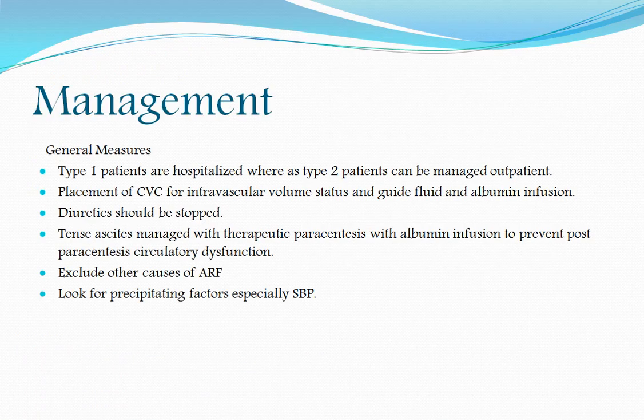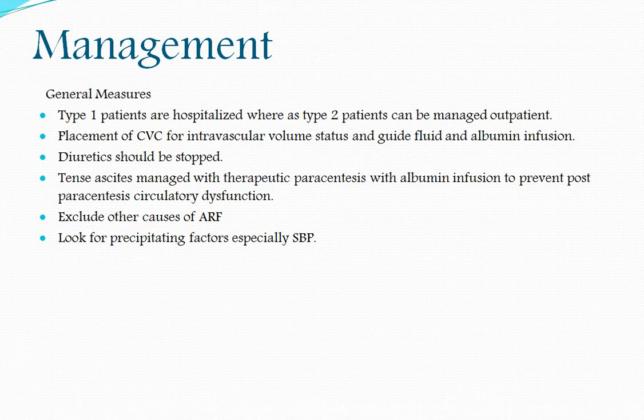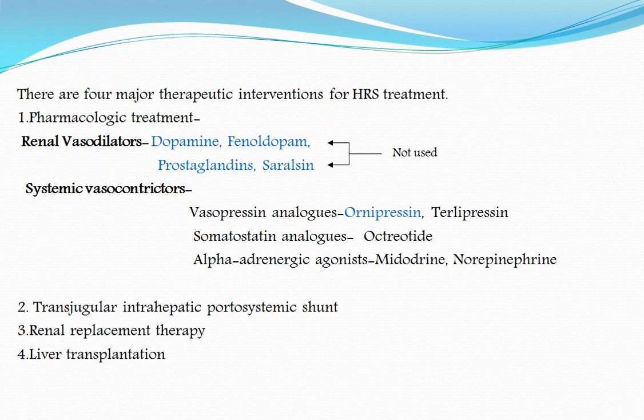For general management, Type 1 patients require hospitalization while Type 2 can be managed as outpatients. A central venous catheter should be placed to guide fluid and albumin infusion. Diuretics must be stopped. Tense ascites should be treated with therapeutic paracentesis and albumin to prevent post-paracentesis circulatory dysfunction. Exclude other causes of acute renal failure and look for precipitating factors, especially spontaneous bacterial peritonitis.